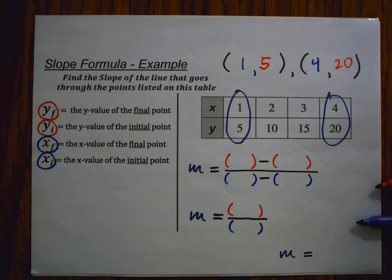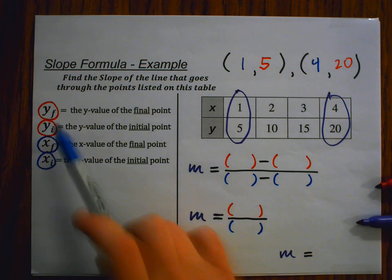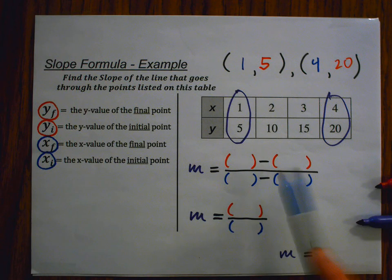Now, we're going to use the same slope formula you may have learned in a previous example. m equals y final minus y initial over x final minus x initial. If you're unfamiliar with this formula, please see the alternative video slope formula example.